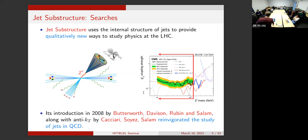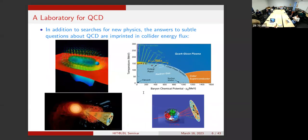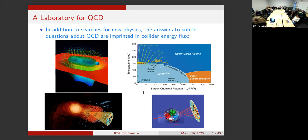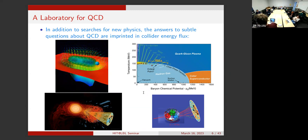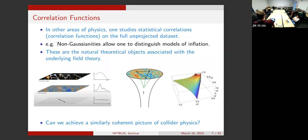For nuclear physicists there are far more interesting questions than looking for a Z prime—in particular, imprinted in this energy flux at infinity you presumably have answers to how confinement behaves and what is the nature of the quark-gluon plasma. It's very similar in spirit to jet substructure, but instead of finding an underlying particle you want to use this asymptotic flux of energy to decode features of confinement or detailed properties of the quark-gluon plasma.